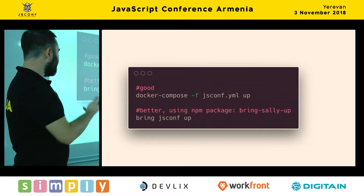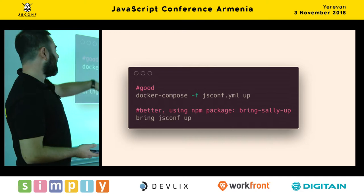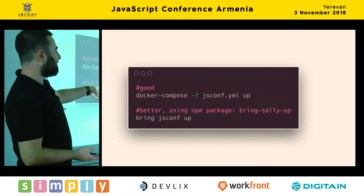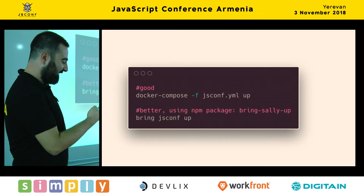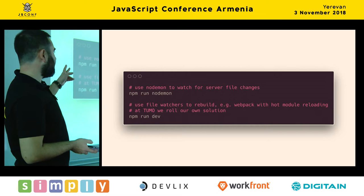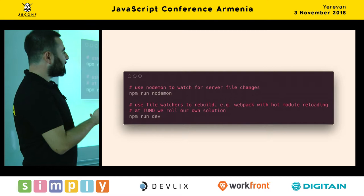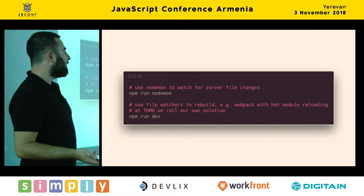For development purposes, what we do at TUMO is we attach one shell into the machine and run Nodemon, so it keeps the server running and whenever one of the files changes, it restarts. Usually you can go into the source folder and run Webpack with hot module reloading. But for TUMO, one of the applications we built is quite a complicated application with an editor and an examining part for students, using the same components within the same project but with different entry points. So we have to build five applications using the same components but different entry points.